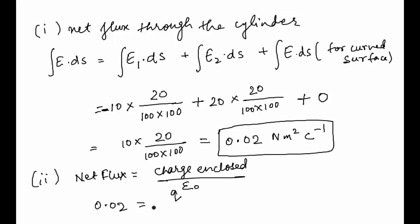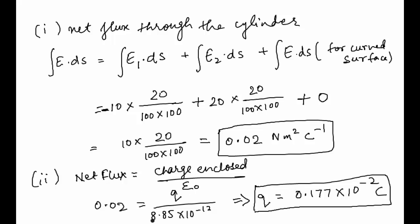Let the net charge be q. The value of ε₀ is 8.85 × 10⁻¹². After solving, we get the value of charge to be 0.177 × 10⁻¹² coulomb. This is the answer for the second part, finding the net charge enclosed.